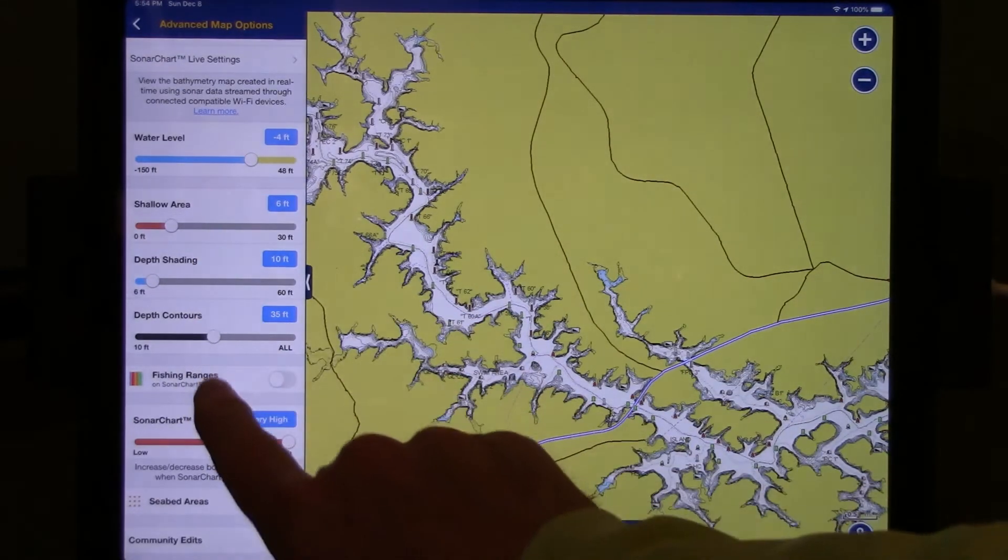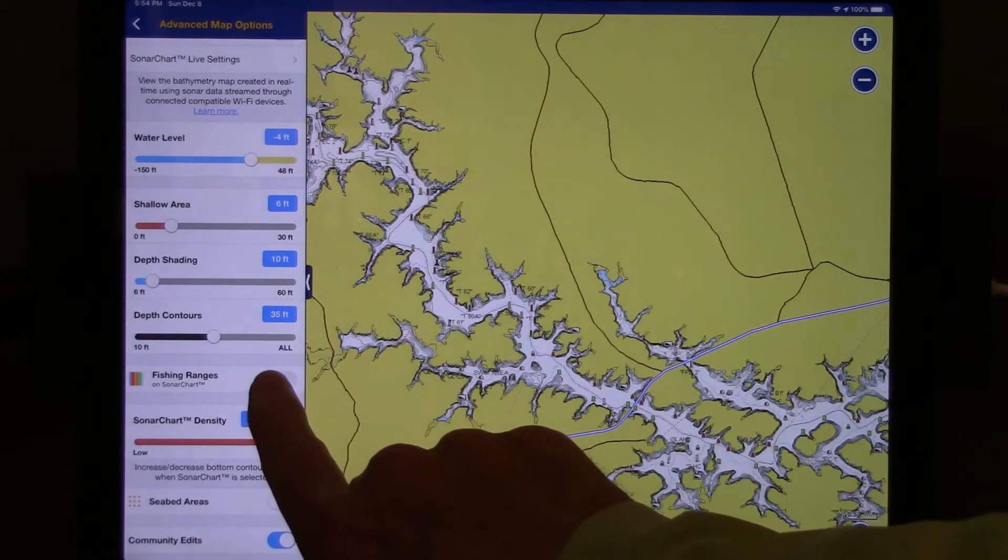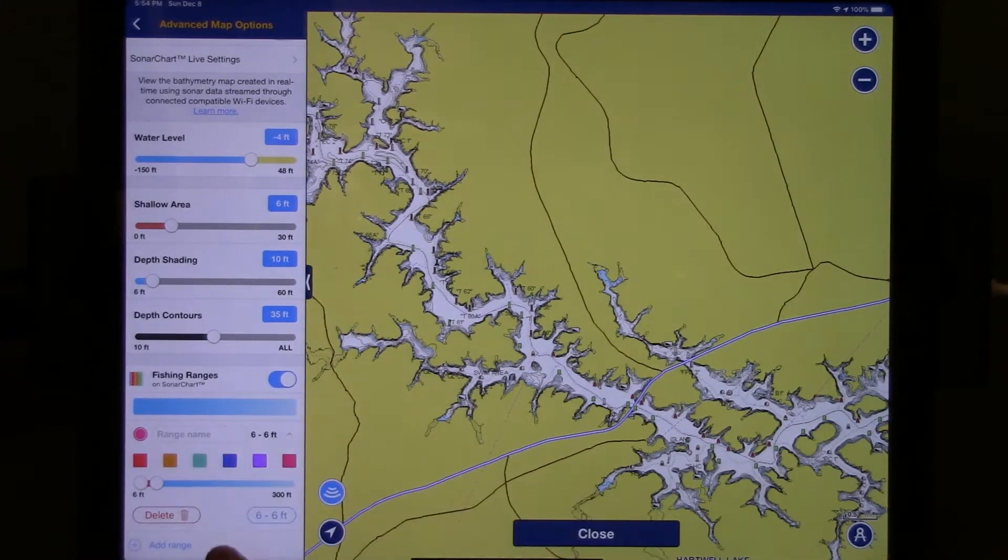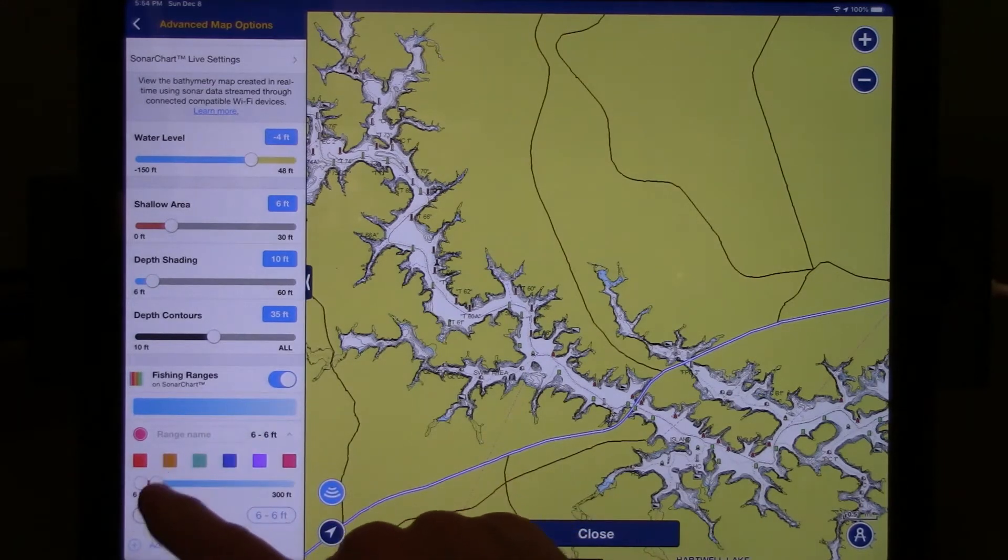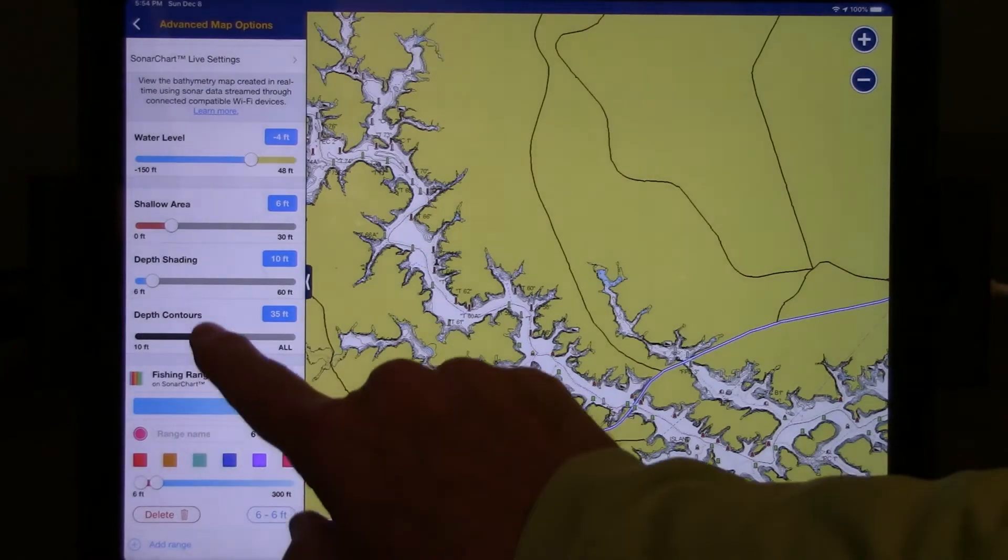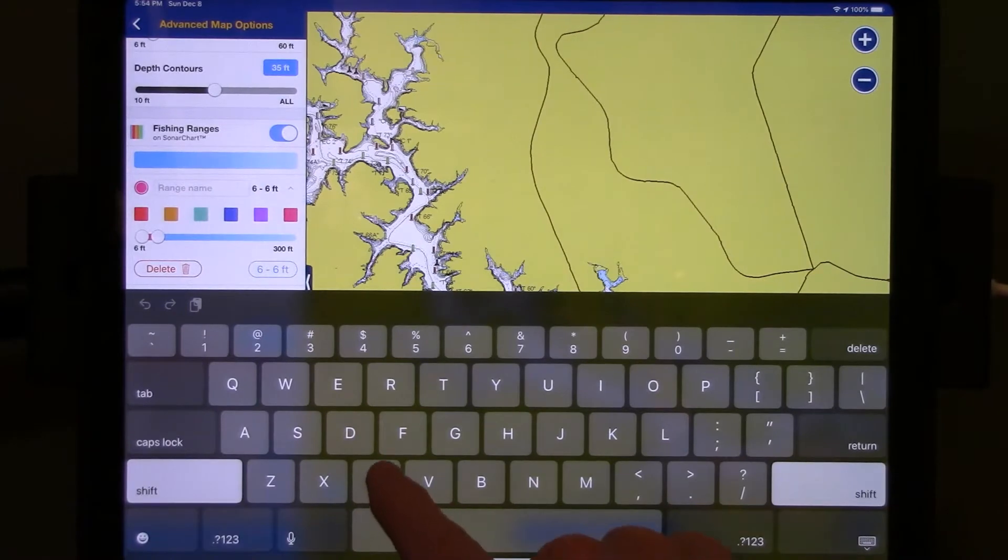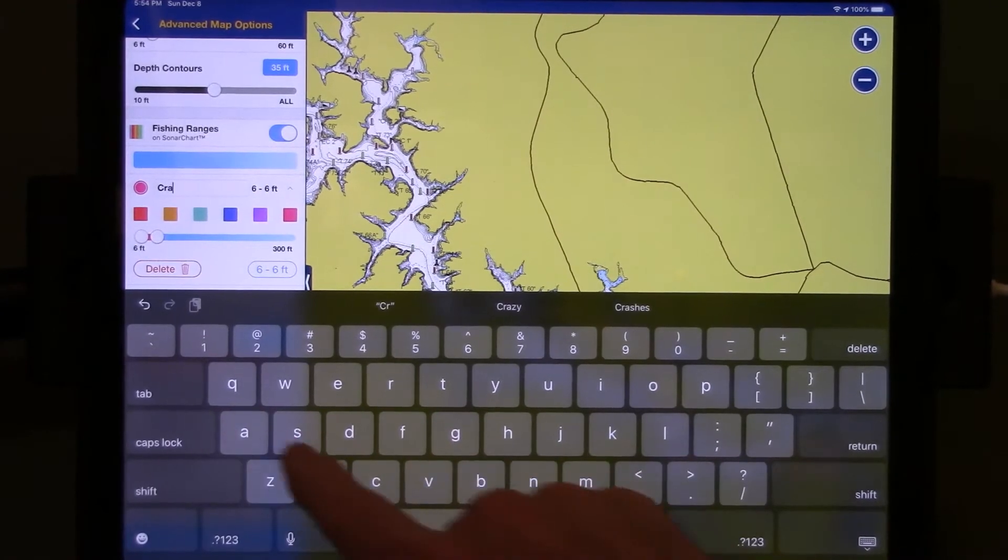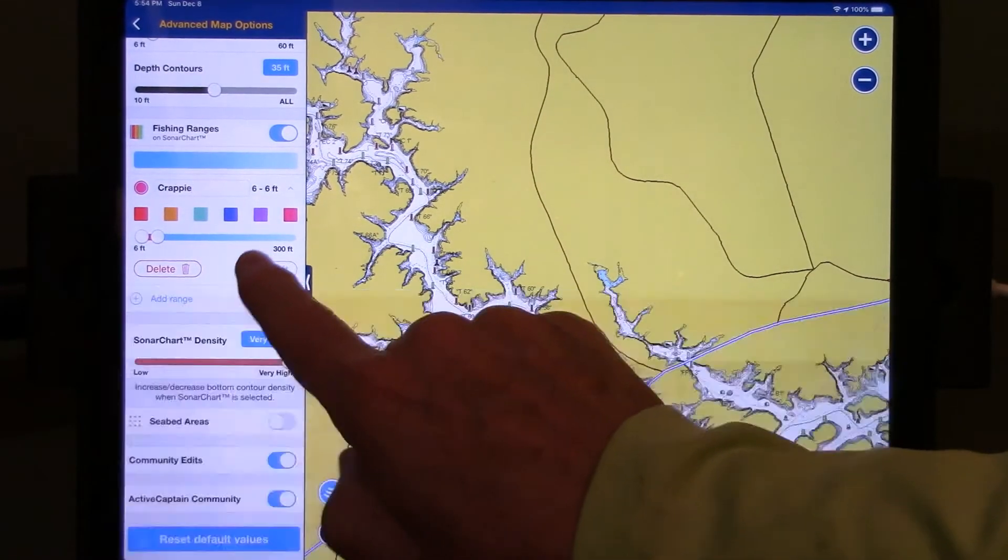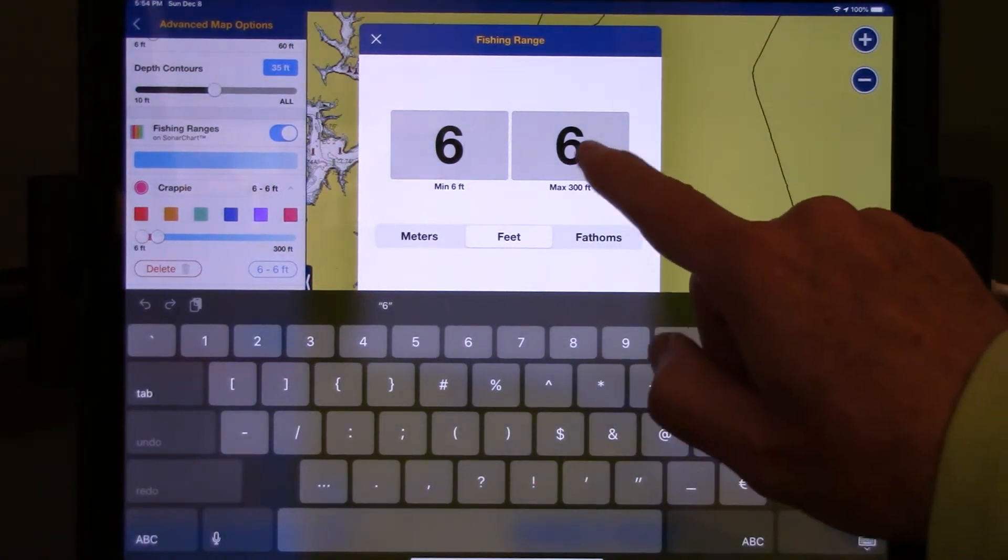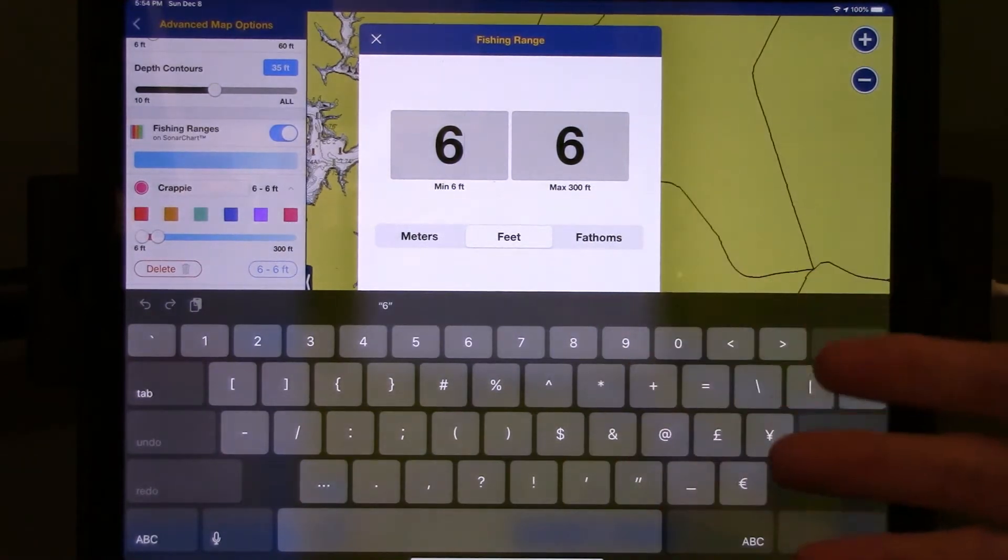Now I'm going to come down on this left-hand side to where it says Fishing Ranges, and I'm going to turn that option on by sliding it from left to right. That opens up the option to color various parts of your chart, and this is very important. The first thing that you're going to want to do is add a range name. I'm going to call one Crappie. I'm going to set the target range for these fish to 18 to 28 feet, because that's where they're holding right now based on a current fishing report.